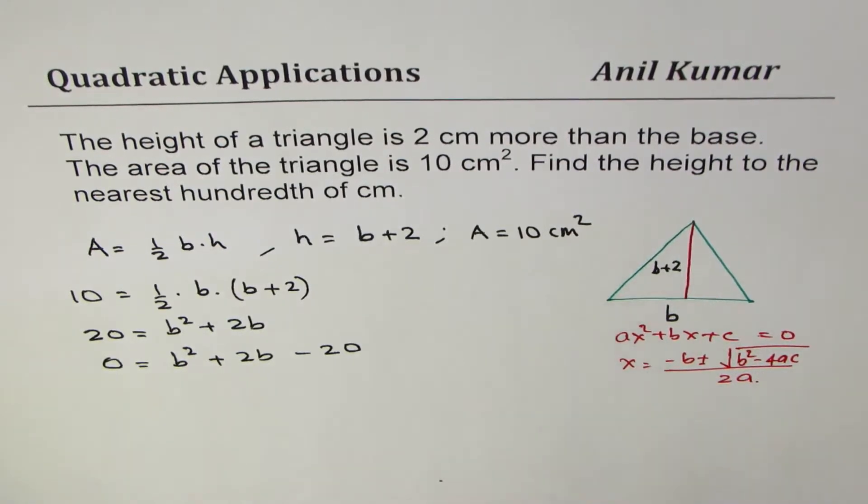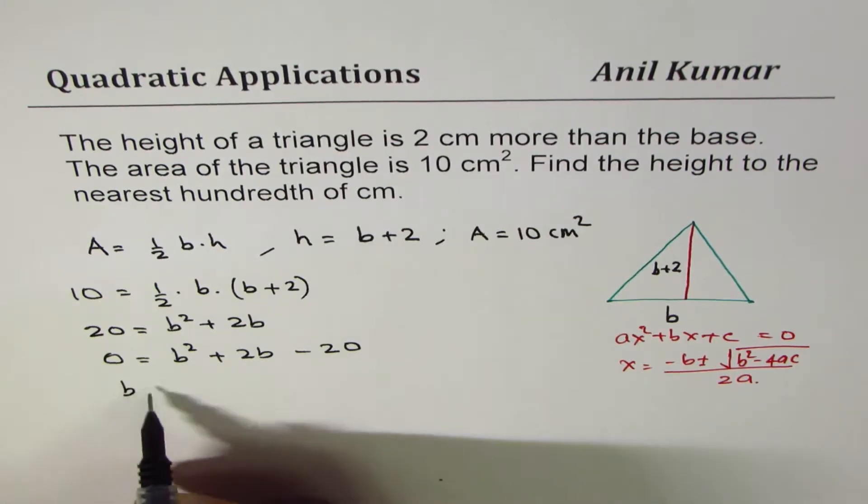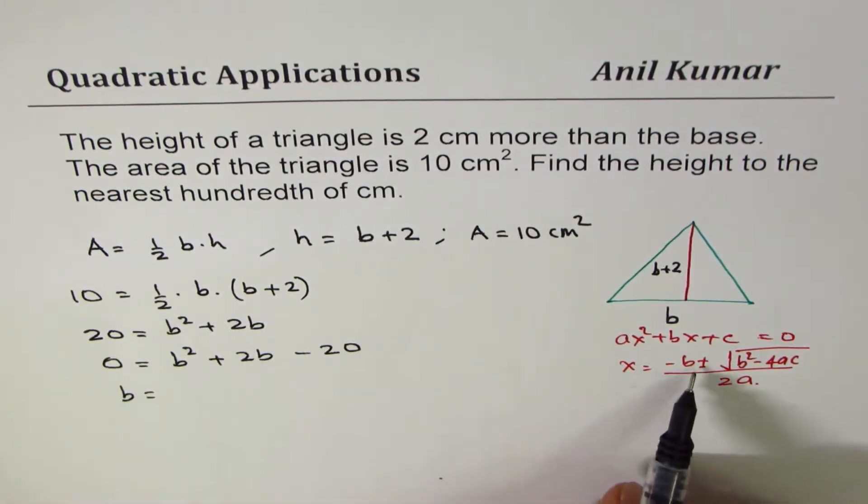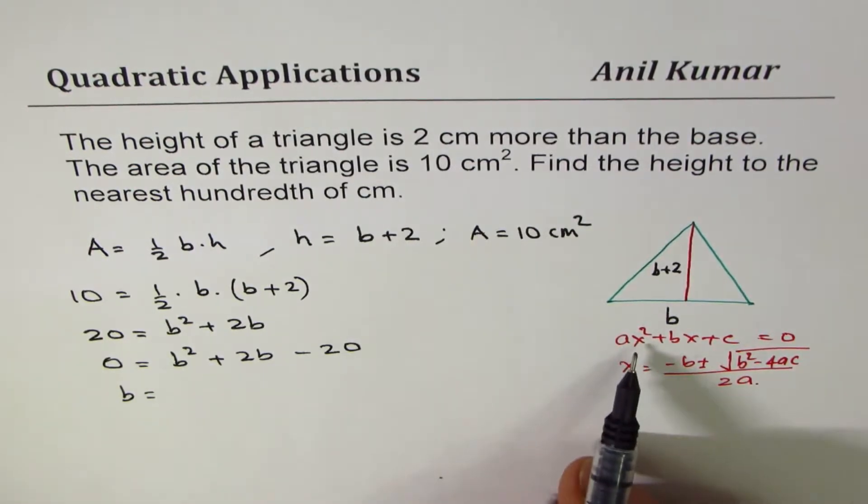Distances, lengths all should be positive. So from here we can find what is the value of this b. Don't get confused with this b and that b. Basically these are coefficients of x square, x, and the constant c.